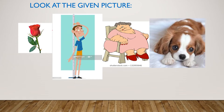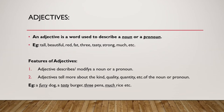As we already know, adjectives are the words that we use to describe a noun or a pronoun, and the same thing we study in the definition of adjectives. An adjective is a word used to describe a noun or a pronoun. Examples: tall, beautiful, red, fat, free, tasty, strong, much, etc. Features of adjectives: an adjective describes or modifies a noun or a pronoun. Adjectives tell more about the kind, quality, quantity, etc. of the noun or pronoun. For example: a furry dog, a tasty burger, 3 pence, much rice, etc.